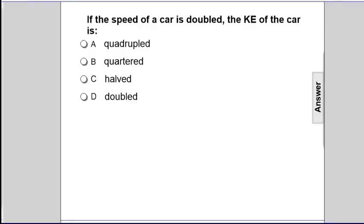Alright, if the speed of a car is doubled, the KE of the car is going to, is it quadruple, quarter, half, or double? Now, this is something where we need to use the equation. And we'll use the equation as a guide for thinking. We know that KE is one-half mv squared.